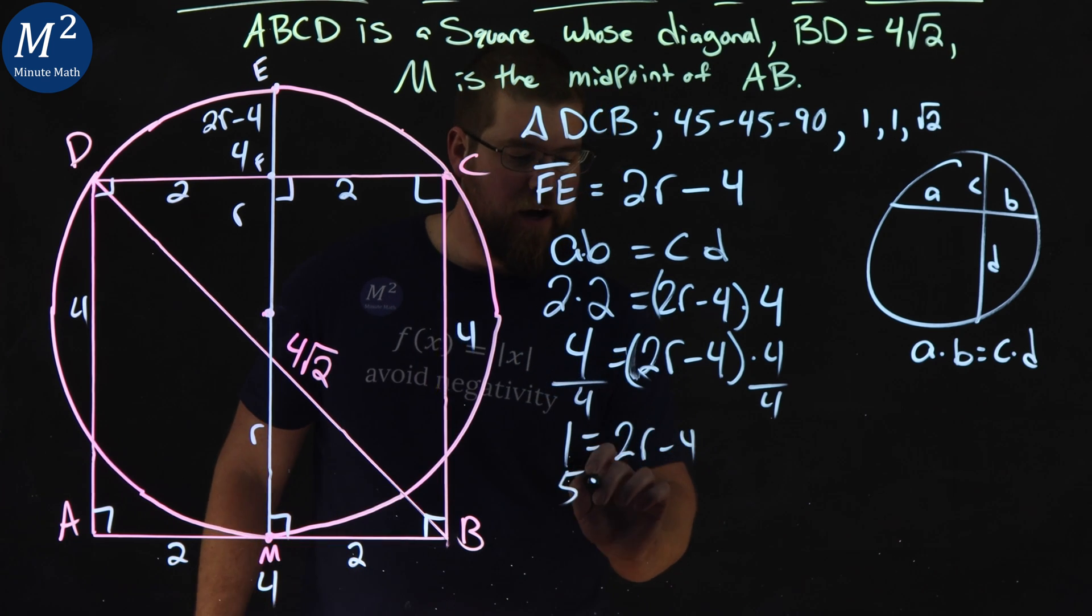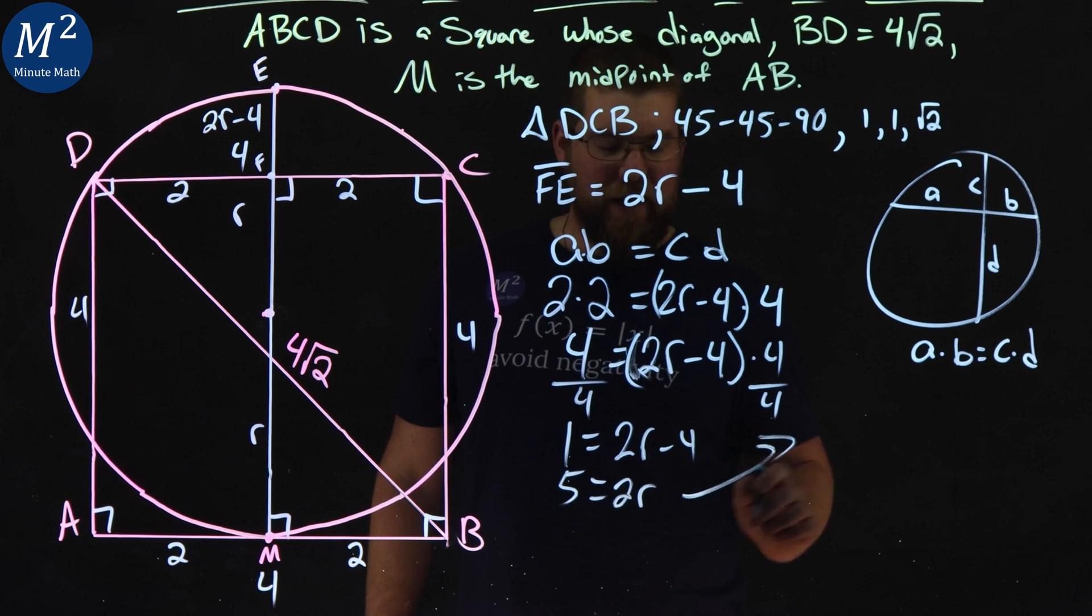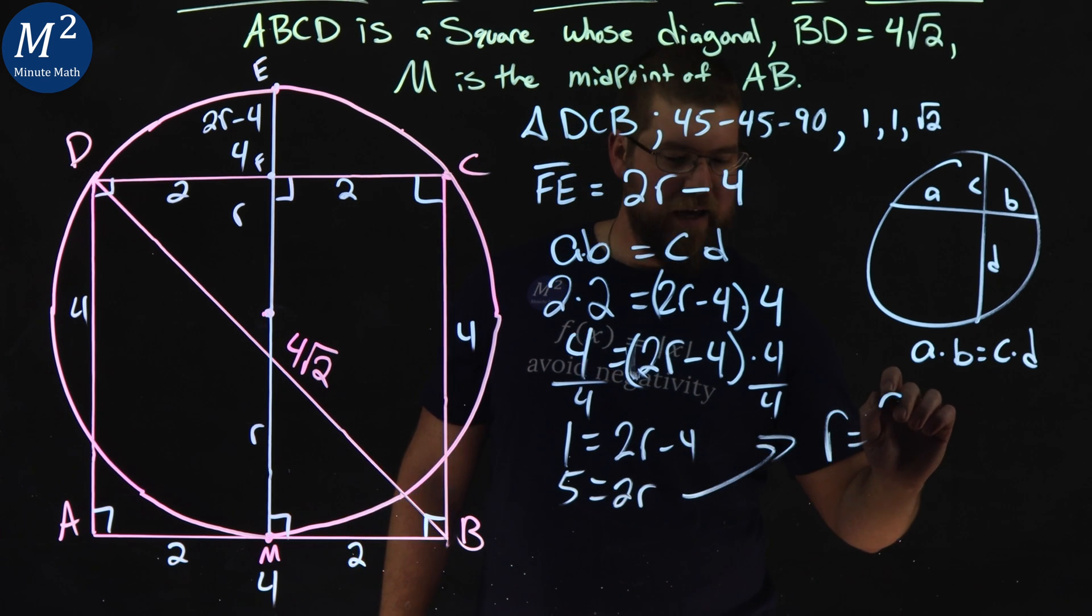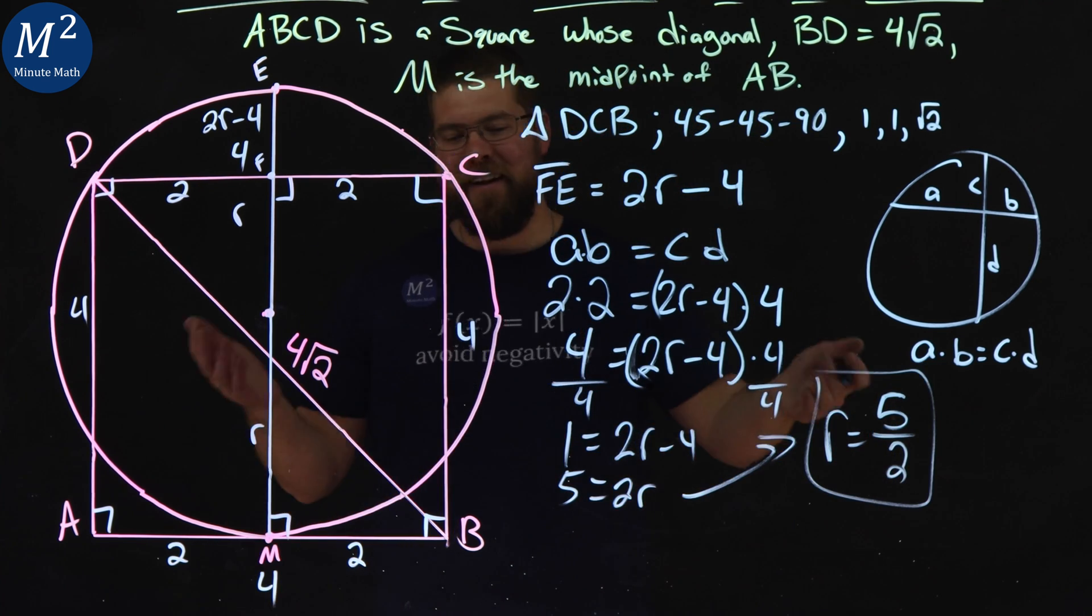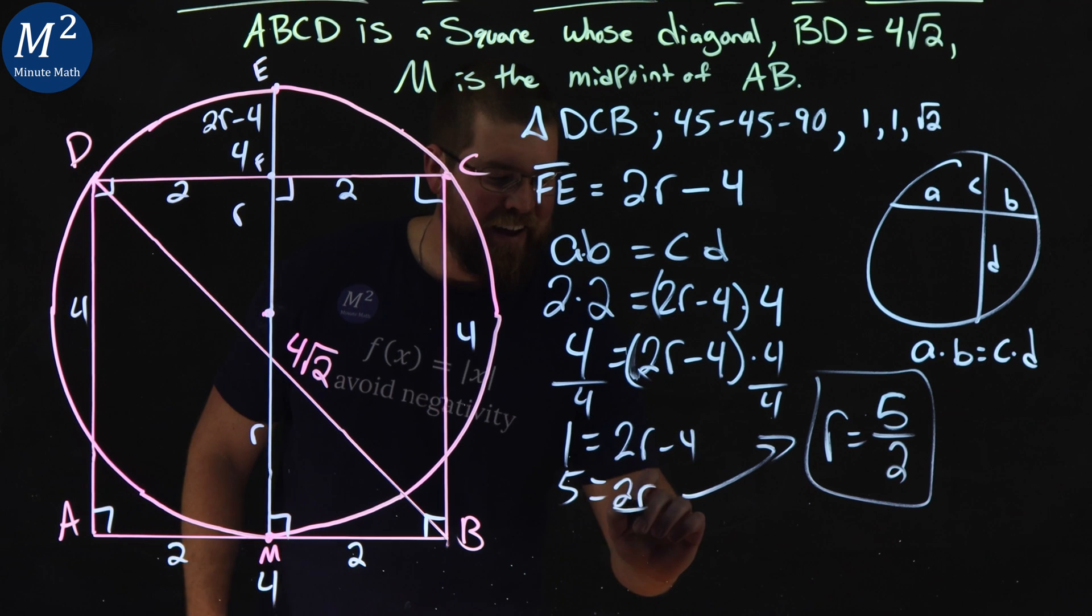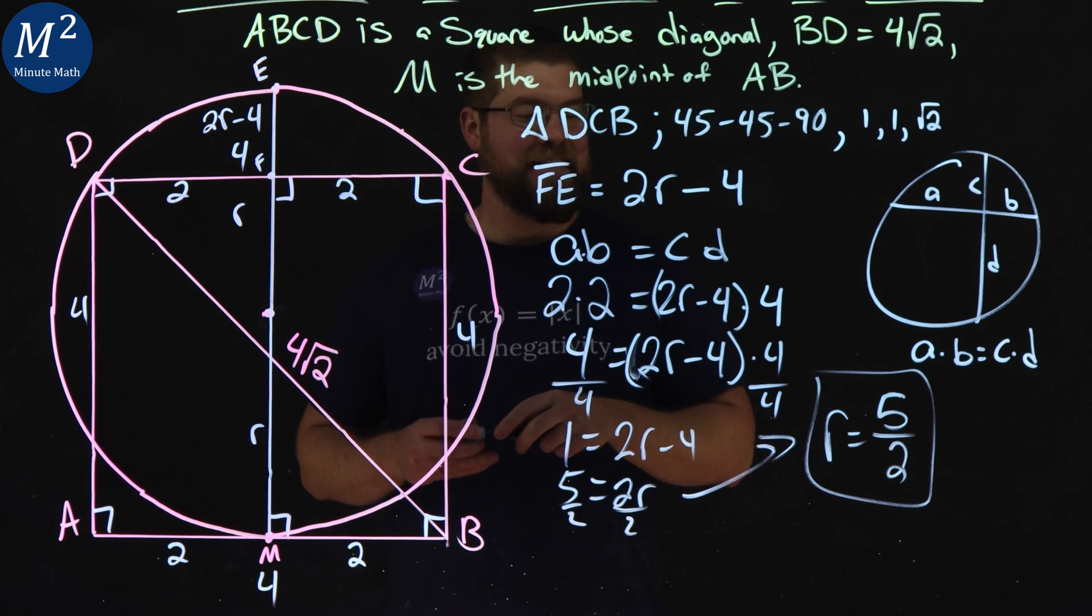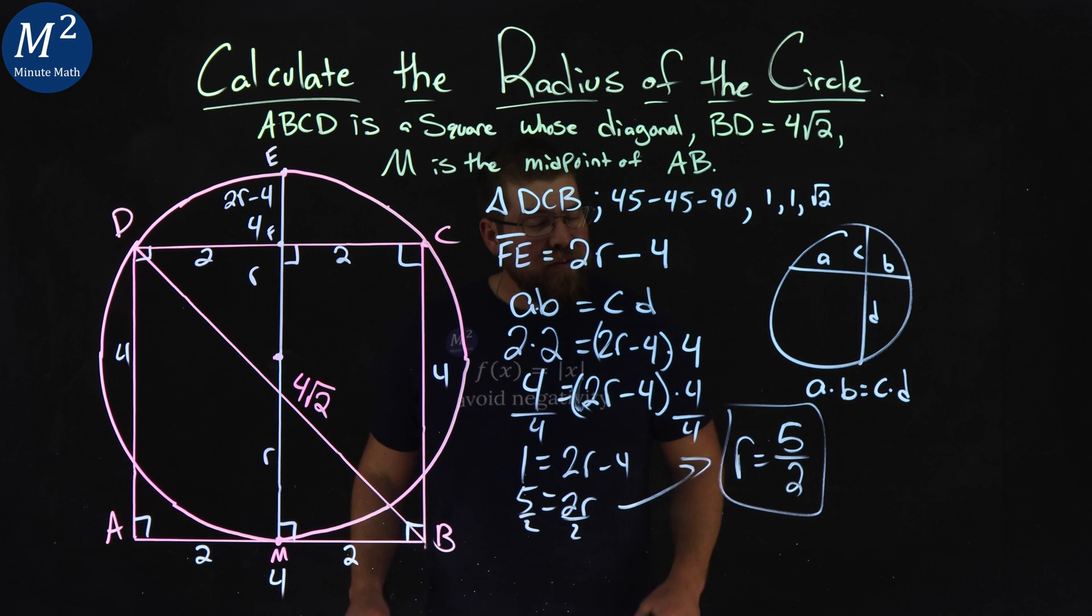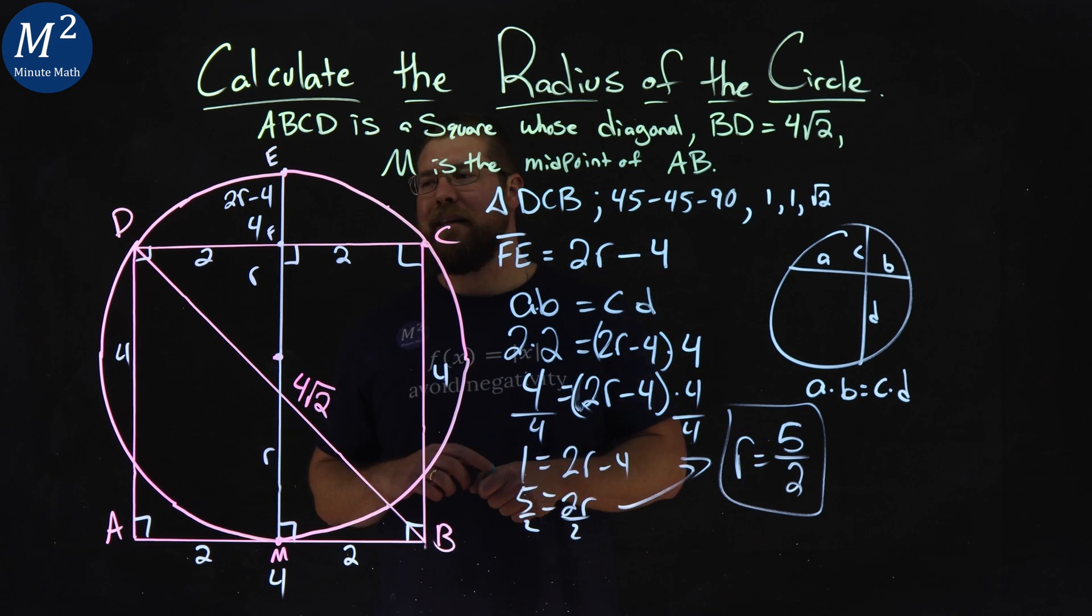We get 5 equals 2R. Divide 2 to both sides. And what we got here is R is equal to 5/2. And there we got it. After all of that, we got a radius of 5/2. Now was that so hard? You had to learn a little bit about the intersecting chords theorem. That's kind of the trick there at the end.